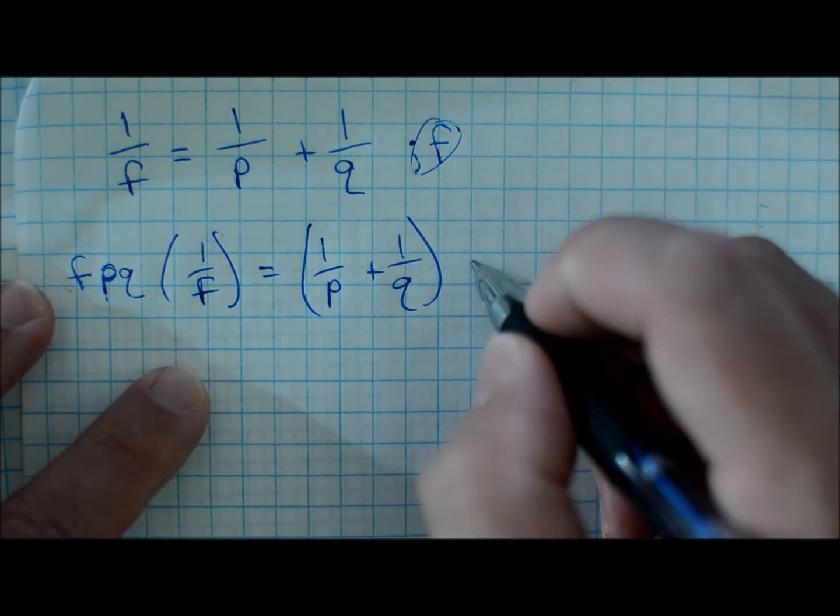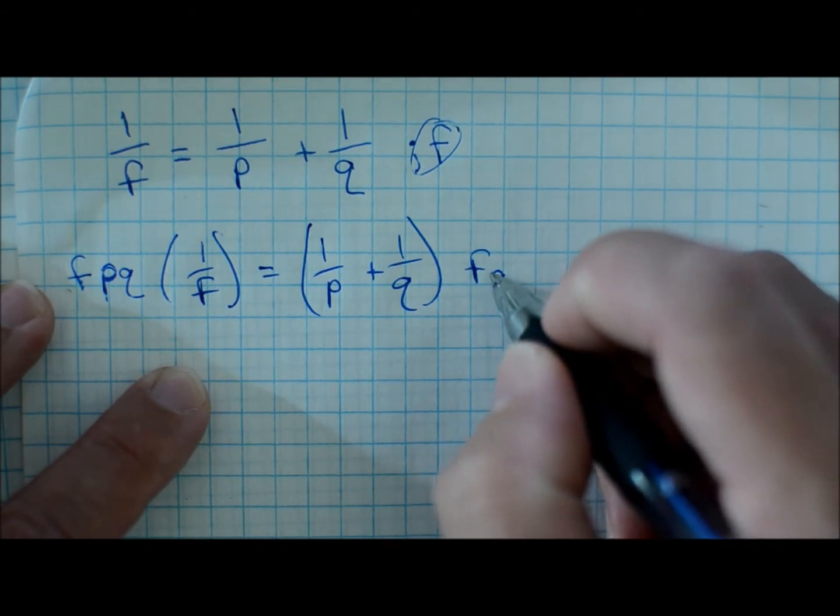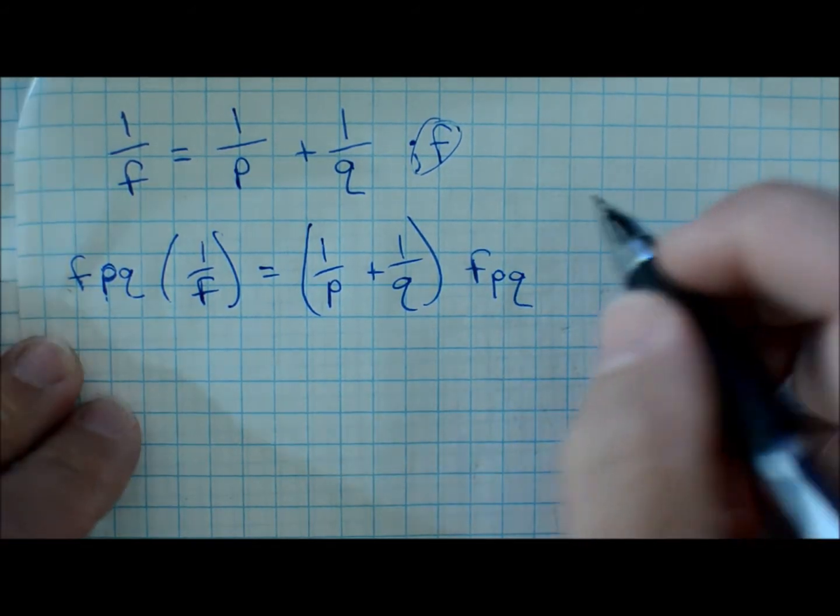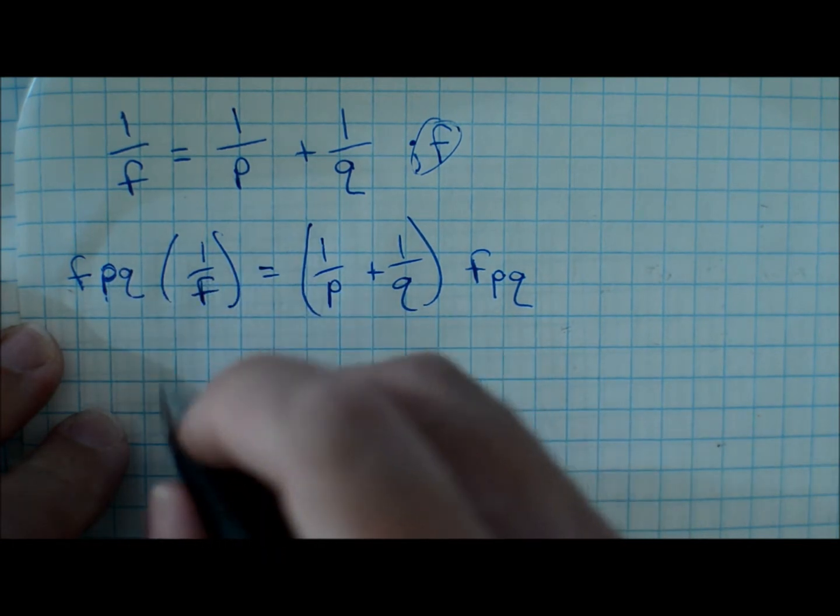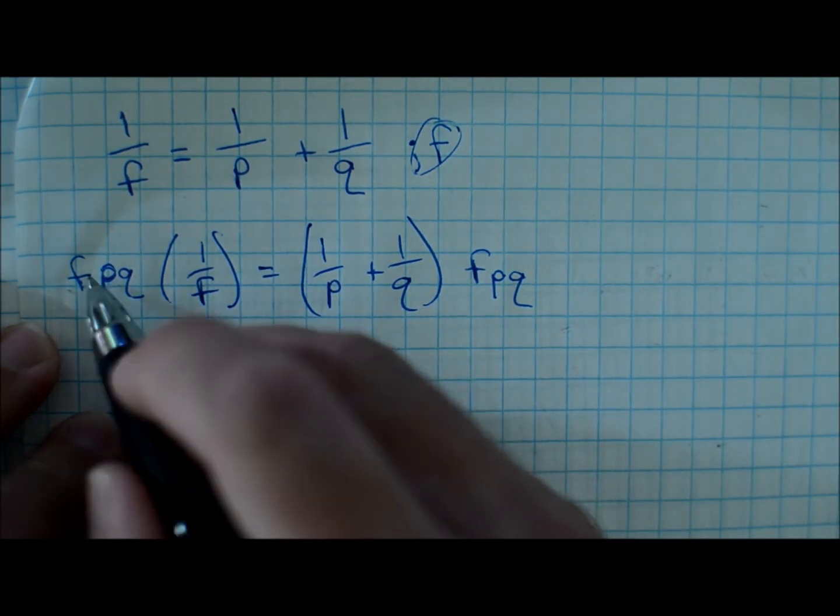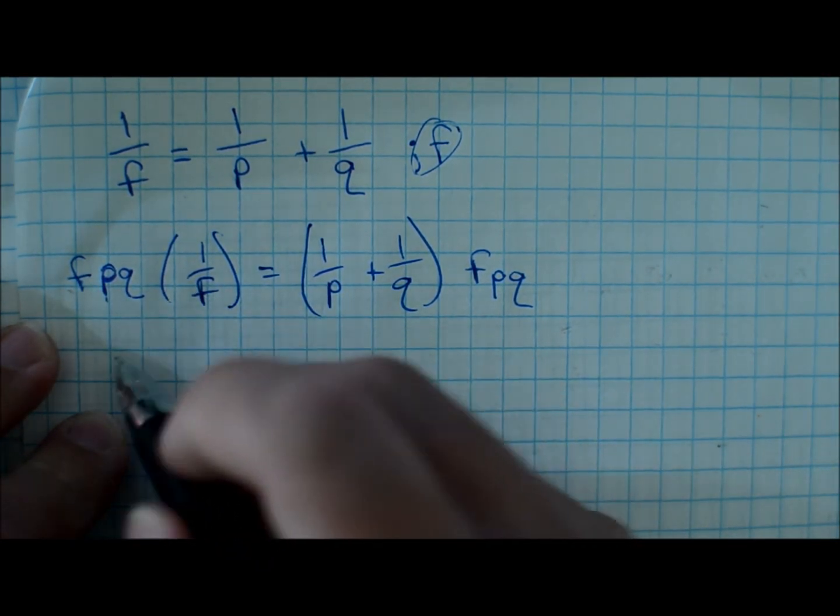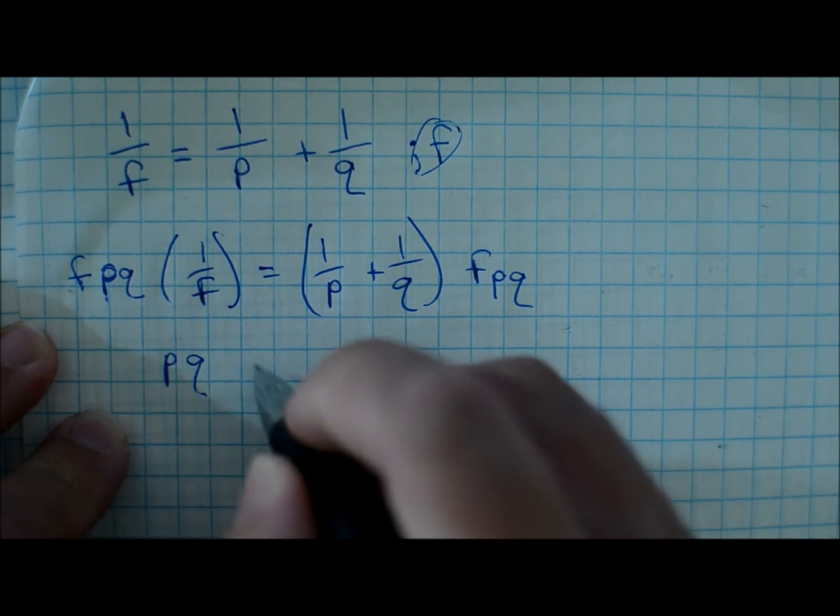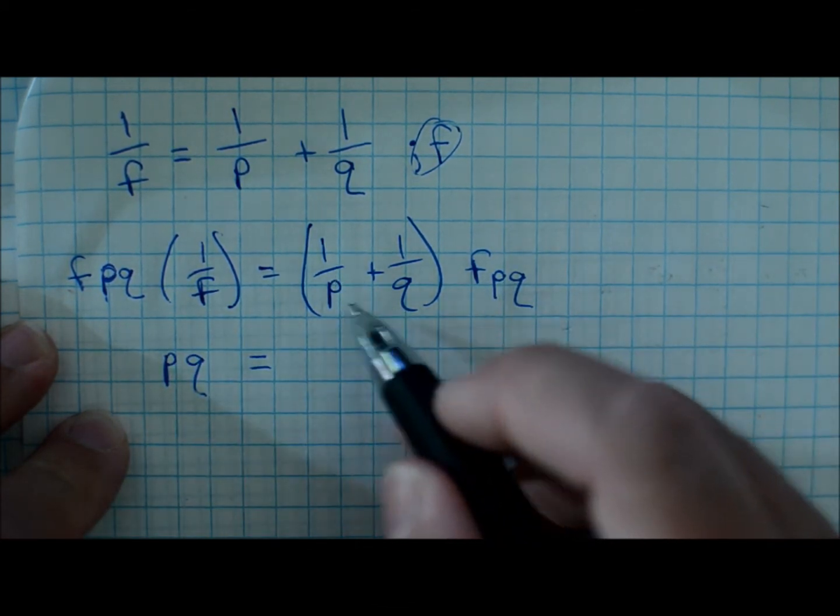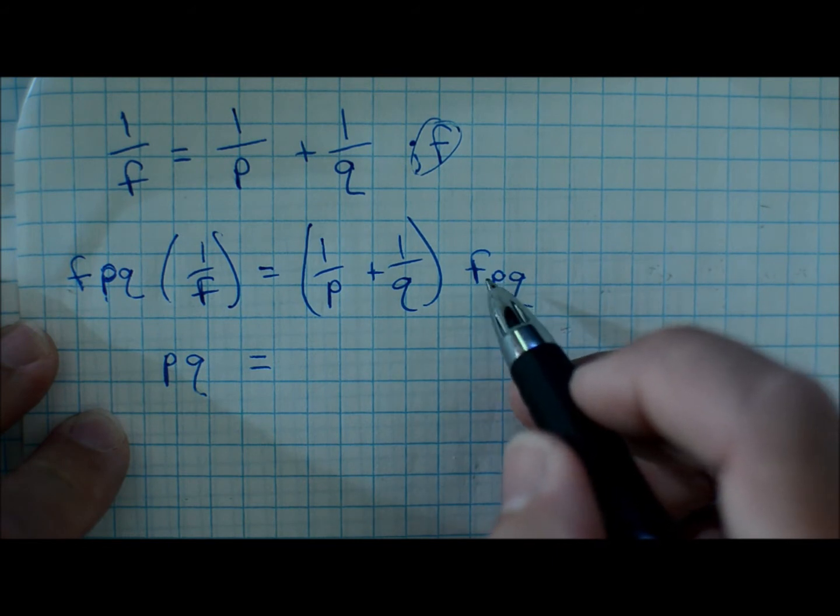one over P plus one over Q times FPQ. And you multiply that through and you get F over F just as a one, so you get FPQ is equal to one over P times F